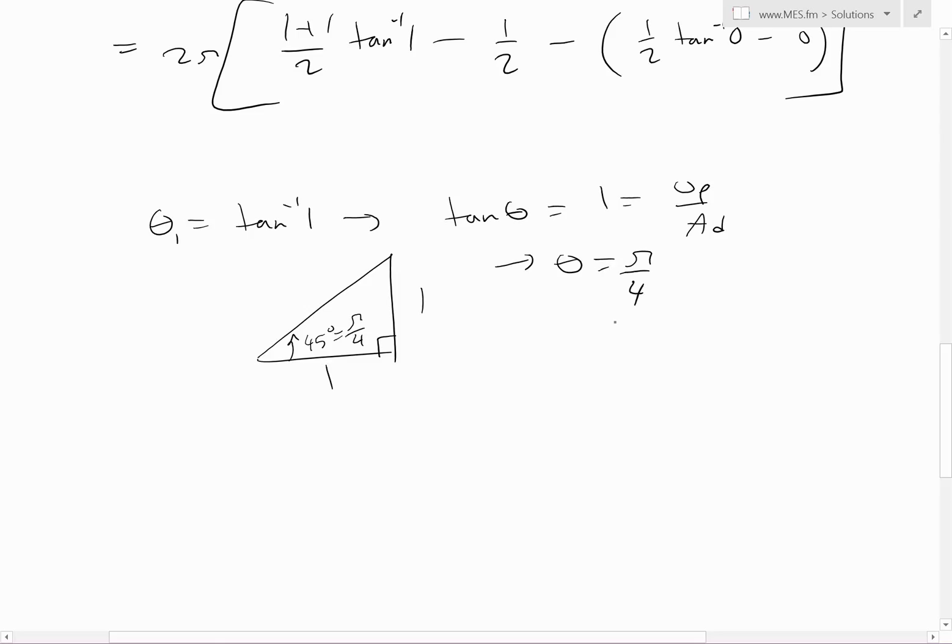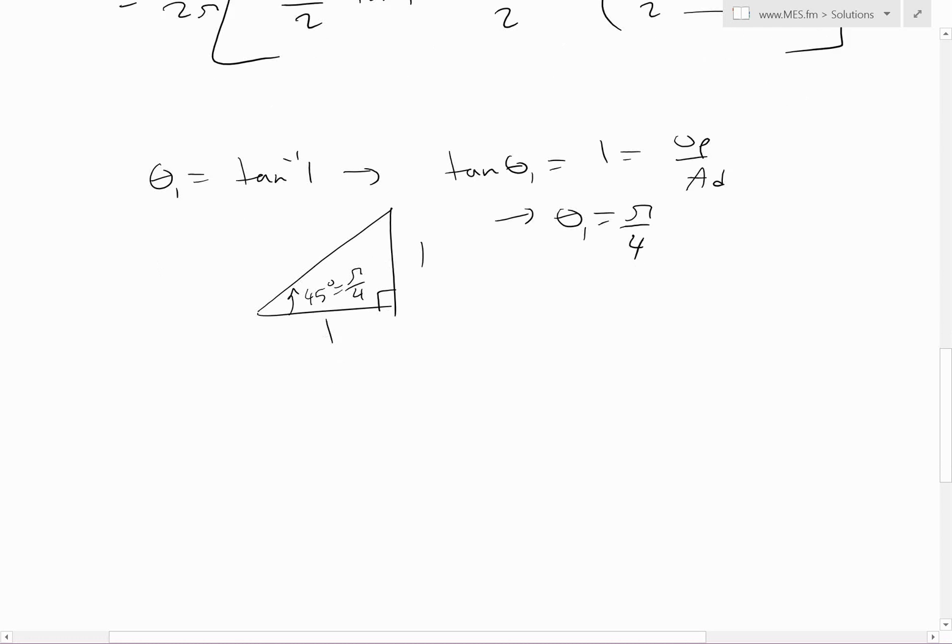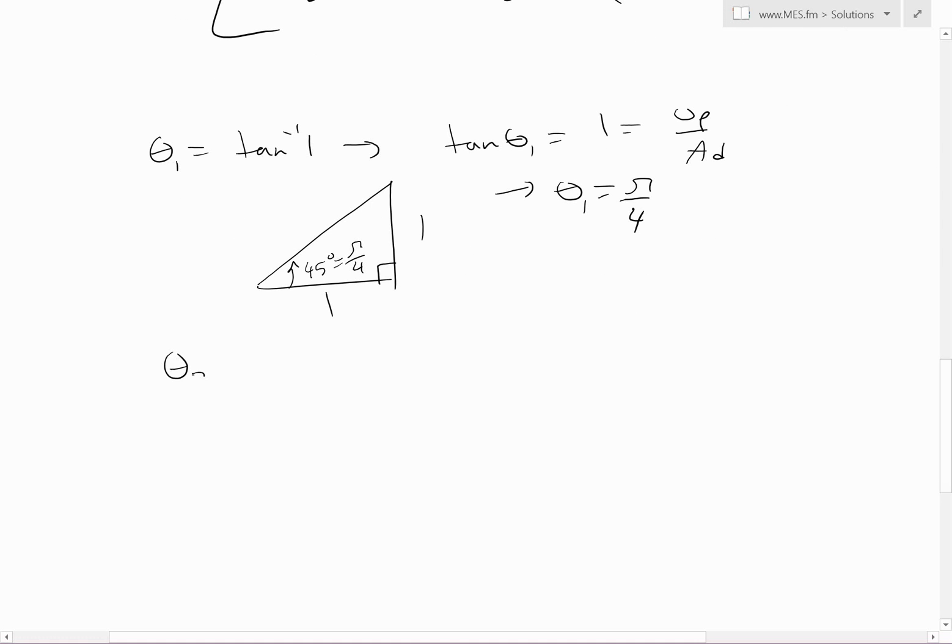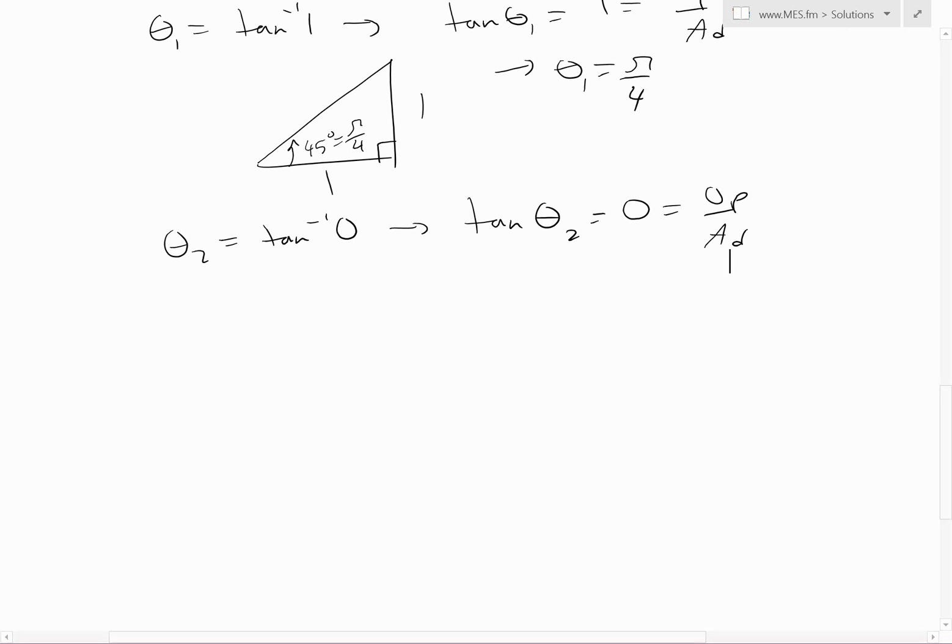For θ₂ = tan⁻¹(0), rearrange to get tan(θ₂) = 0. This is opposite over adjacent, so the only way is where opposite equals 0. That's only when you have a perfectly straight line with angle 0, so θ₂ = 0.